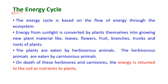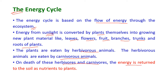The energy cycle is based on the flow of energy through the ecosystem. Energy from sunlight is converted by plants into new plant materials such as leaves, flowers, fruits, branches, trunks, and roots. Plants are eaten by herbivorous animals, and herbivorous animals are eaten by carnivorous animals. On the death of these herbivores and carnivores, the energy is returned to the soil as nutrients for plants.